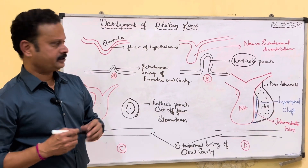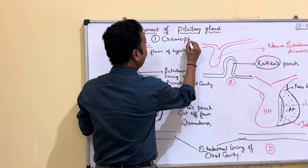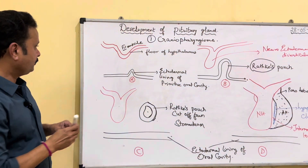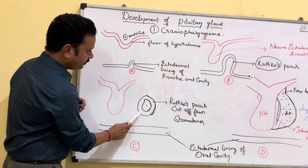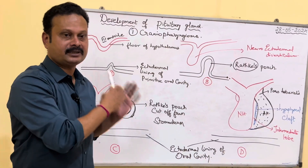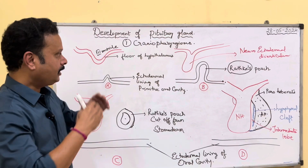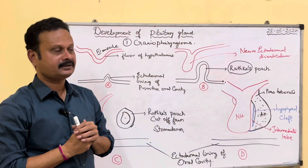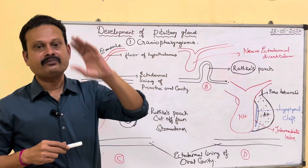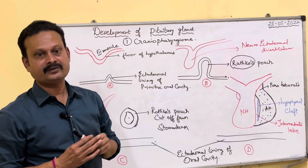Coming to the anomalies — number one is craniopharyngiomas. The site where Rathke's pouch formed, with the subsequent development of the oral cavity and pharynx, corresponds to the roof of the nasopharynx. The tract from the roof of the nasopharynx is called the craniopharyngeal canal. Remnants of this canal give rise to craniopharyngioma, which is usually seen in relation to the sphenoid bone.